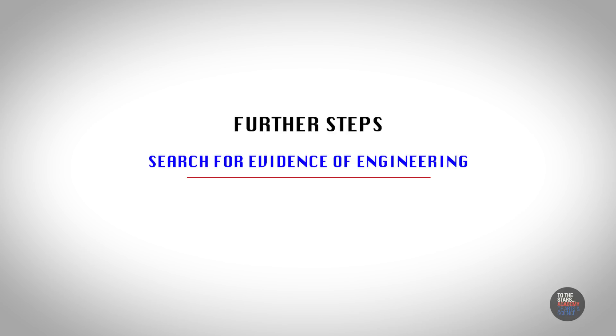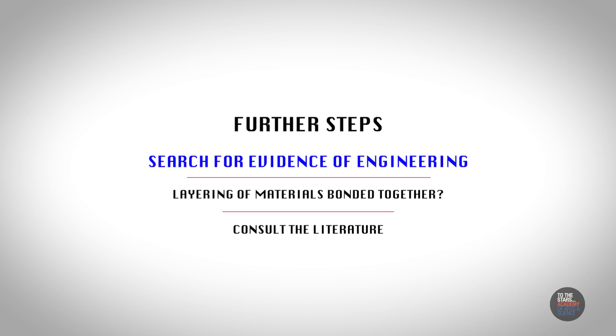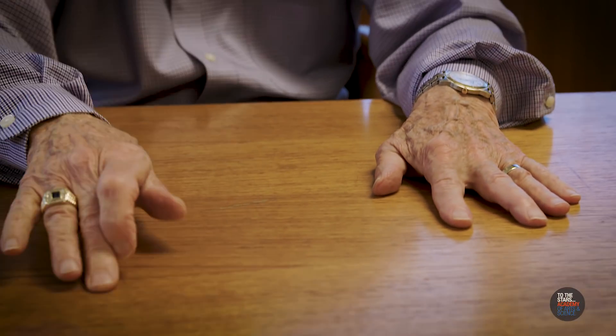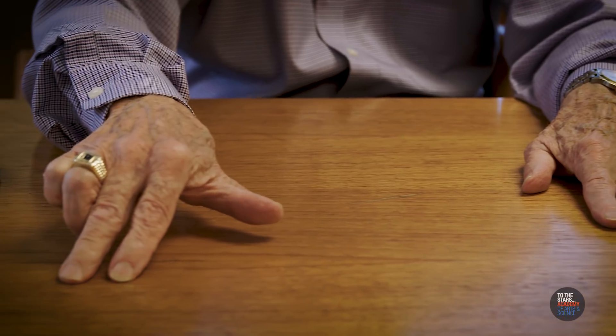Depending on what we find — if there's layering of materials that are bonded together — we go into the regular literature to determine whether there are problems bonding these kinds of materials together or not. So it becomes like a tree with all these branches to follow with regard to bonding and isotope ratios. At that point, it's the data that leads us. You might also get to a point where we actually do experiments irradiating the material with certain frequencies that have come out from making measurements on the material, which show that it presumably has resonances at certain frequencies.